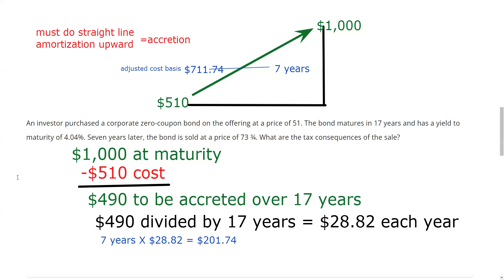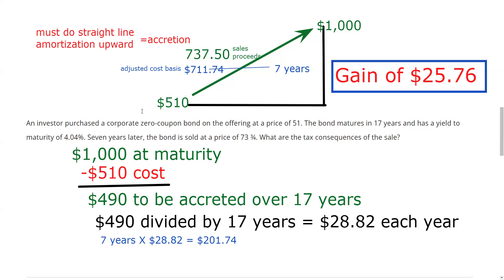It says I sell the bond for 73 and three-quarters. If you get stuck on three-quarters: 73 is easy — that's $730 — and then three-quarters: take your calculator, 3 divided by 4, times a bond point of 10, gives you $7.50. So my sales proceeds are $737.50. I net sales proceeds minus my adjusted cost basis of $711.74, and I come up with a gain of $25.76. That is the answer to this question.